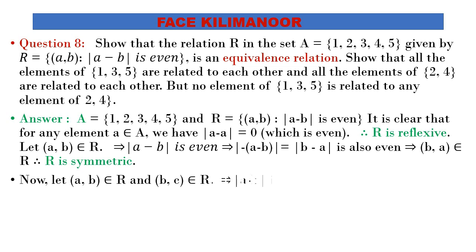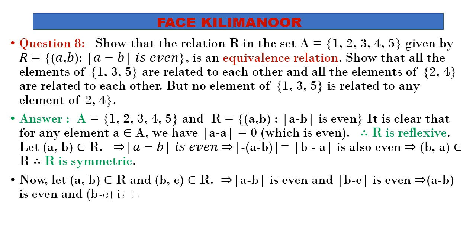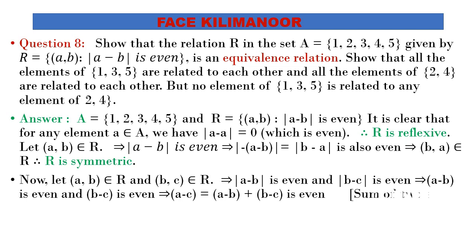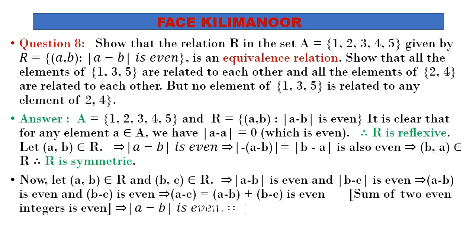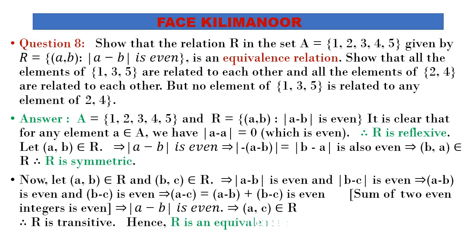For transitivity: if (a,b) belongs to R and (b,c) belongs to R, then |a−b| is even and |b−c| is even, which implies (a−b) is even and (b−c) is even. Adding them: (a−b) + (b−c) = a−c. The sum of two even numbers is even, so |a−c| is also even. Therefore (a,c) belongs to R and R is transitive. Hence the relation is reflexive, symmetric, and transitive, so it is an equivalence relation.